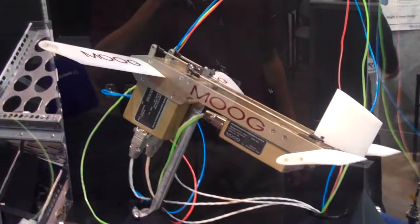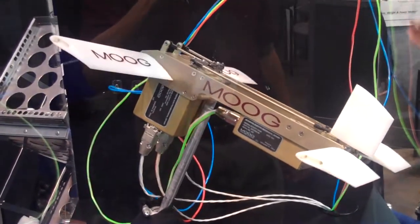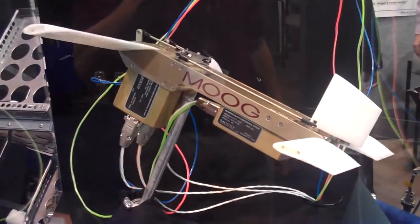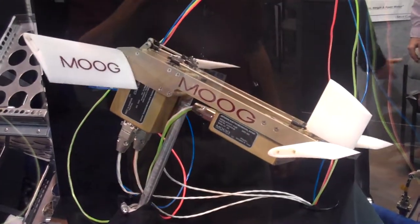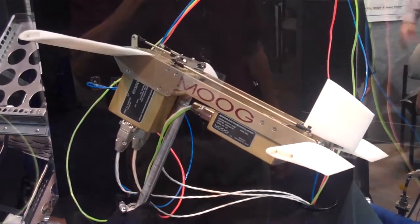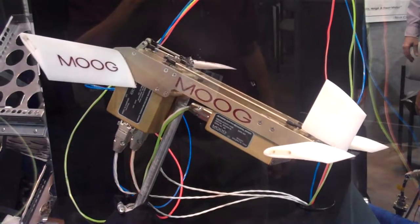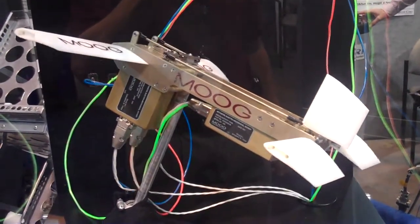It is a closed-loop control system for the various control surfaces on a UAV. The surfaces in the Model 820 actuators you see here are in fact controlled by light, by fiber optics.